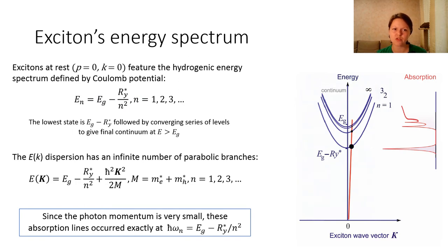When we have excitons at rest, they feature the hydrogenic energy spectrum, which is defined by Coulomb potential between electron and hole. The lowest state is defined as the difference between band gap energy and exciton binding energy, followed by a converging series of levels to give final continuum at energies exceeding the band gap energy.